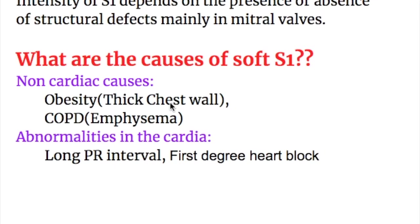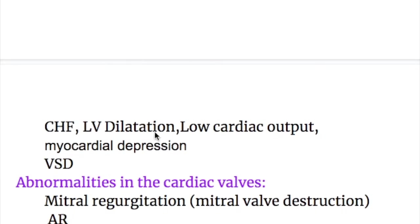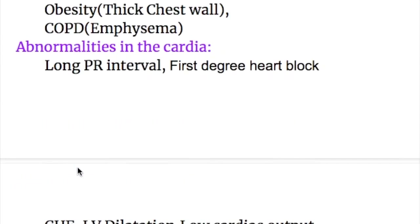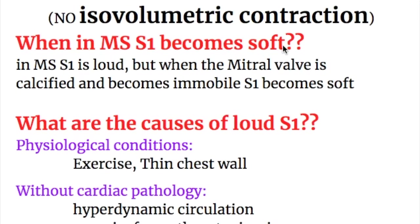Cardiac abnormalities causing soft S1 include long PR interval, first degree heart block, and conditions that decrease cardiac contractility such as congestive heart failure, left ventricular dilatation, low cardiac output, and myocardial depression. Ventricular septal defects also cause a soft first heart sound. Regarding valvular causes, mitral and aortic regurgitation cause soft first heart sound with no isovolumetric contraction. In mitral stenosis, S1 is normally loud, but if the mitral valve becomes calcified and immobile, the first heart sound becomes soft.